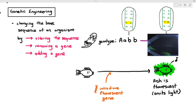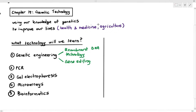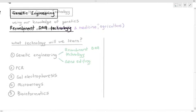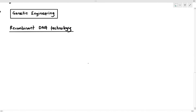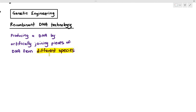You are either changing the base sequence of the organism, introducing a new gene, or sometimes removing a gene from the organism. Under genetic engineering there are two types: recombinant DNA technology and gene editing. We are going to look at recombinant DNA technology first. Recombinant DNA technology is the technique of producing DNA by artificially joining pieces of DNA from different species — that's why it's called recombinant, or combined, DNA.